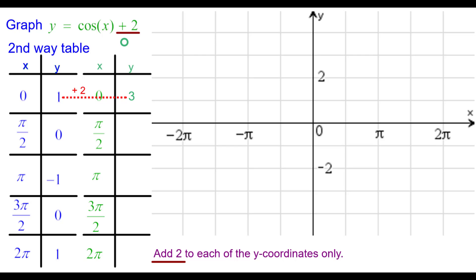So one plus two is three. And so we'll plot zero comma three. Zero plus two is two, pi over two comma two. Negative one plus two is one, over to the right pi, up one.